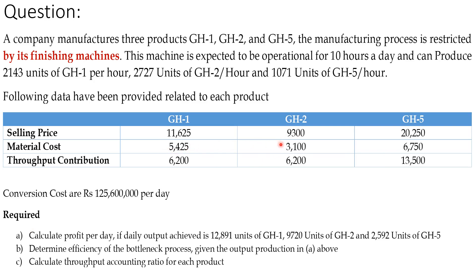Selling prices are: GH1 = 11,625; GH2 = 9,300; GH5 = 20,250. Material costs are: GH1 = 5,245; GH2 = 3,100; GH5 = 6,750. Throughput contribution (selling price minus material cost): GH1 = 6,380; GH2 = 6,200; GH5 = 13,500. Conversion cost is Rs. 125,600,000 per day. You are asked to calculate profit per day if daily output is 12,891 units of GH1, 9,720 units of GH2, and 2,592 units of GH5.